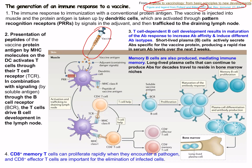Here we'll go quickly through the generation of an immune response to a vaccine. With immunization using a conventional protein antigen, the vaccine is injected into the muscle and the protein antigen is taken up by dendritic cells — the primary antigen-presenting cells — which are activated through pattern recognition receptors like toll-like receptors. Signals in the adjuvant stimulate these receptors, and then the antigen is trafficked to the draining lymph nodes.